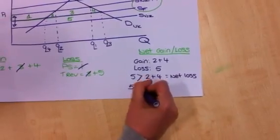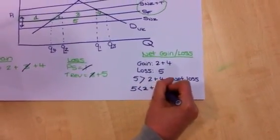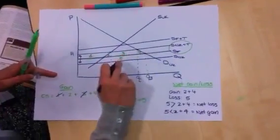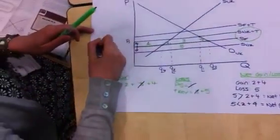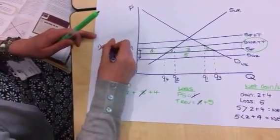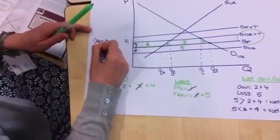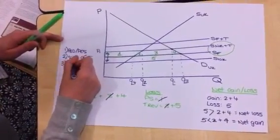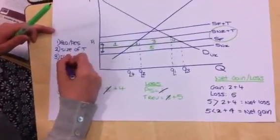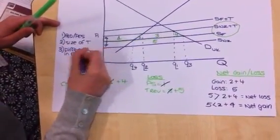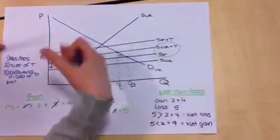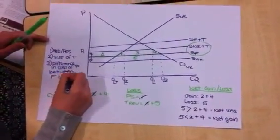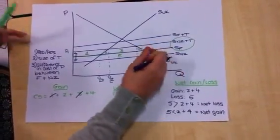Now, what determines how big two and four and five are, are three things really. One, we've got the gradients of the curve, so that's PED, PES. Two is the size of the tariff that we're going to put on. And three is the difference in, I suppose, the cost of production between the two countries that are exporting their products to the UK. So, the two countries that you're importing products from. So, I'm going to put France and New Zealand. The bigger the difference in the cost of production, the further away these two lines are.